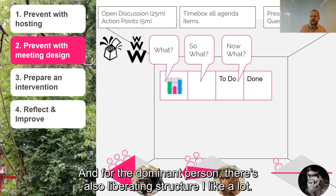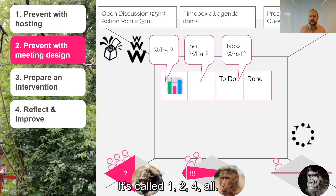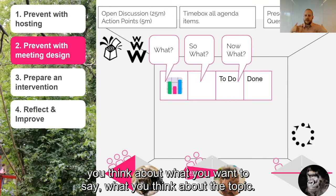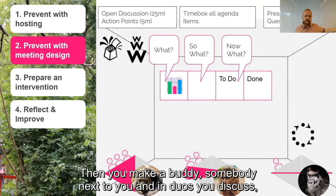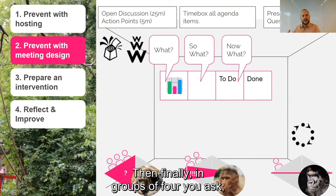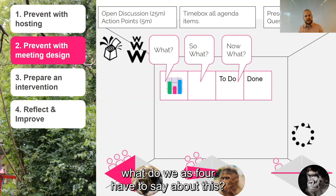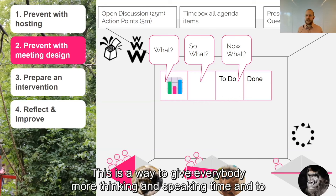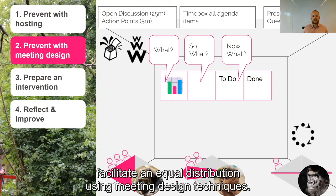For the dominating person, there's also a liberating structure I like: 1-2-4-All. In a group discussion, there's limited time to think and only one person can speak. So first, individually, you think about what you want to say. Then you make a buddy and in duos you discuss. Both persons get a chance to think and speak. Then in groups of four you ask, what do we as four have to say about this? And finally all groups share what they think. This is a way to give everybody more thinking and speaking time and facilitate an equal distribution using meeting design techniques.